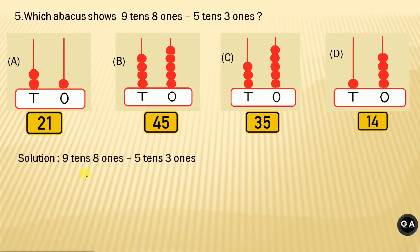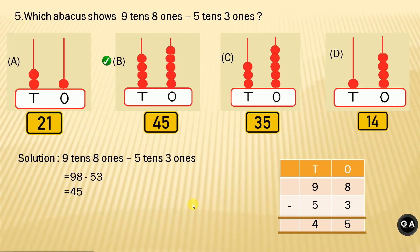Solution: 9 tens means 90 and 8 ones means 8, so 90 plus 8 equals 98 minus 5 tens means 50 and 3 ones means 3. So, 50 plus 3 equals 53, means 98 minus 53 equals 45. I hope friends that you know how to do subtraction, and if you don't, you can see on my screen here: 8 minus 3 equals 5, 9 minus 5 equals 4, so 98 minus 53 equals 45. The correct answer is option B.